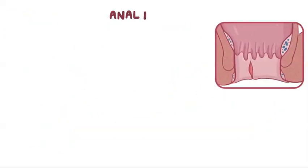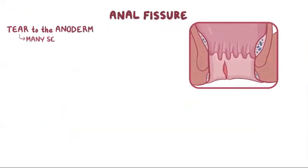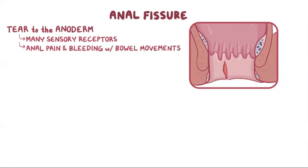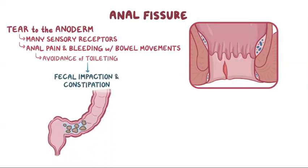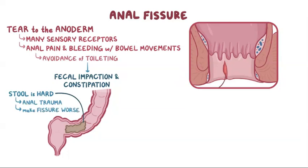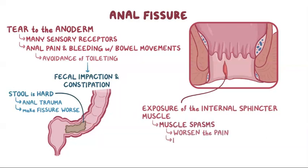An anal fissure is a tear to the anoderm, which contains many sensory receptors. So anal fissures cause anal pain and bleeding that often accompany bowel movements. The pain can be so severe that it can lead to avoidance of toileting, which leads to fecal impaction and constipation. As the stool remains in the gastrointestinal tract, more fluid gets reabsorbed, leaving the stool hard. Passage of the hard stool can cause anal trauma and make the fissure worse. An anal fissure can also cause exposure of the internal sphincter muscle, leading to muscle spasms, which can worsen the pain, restrict blood flow to the fissure, and prevent healing.